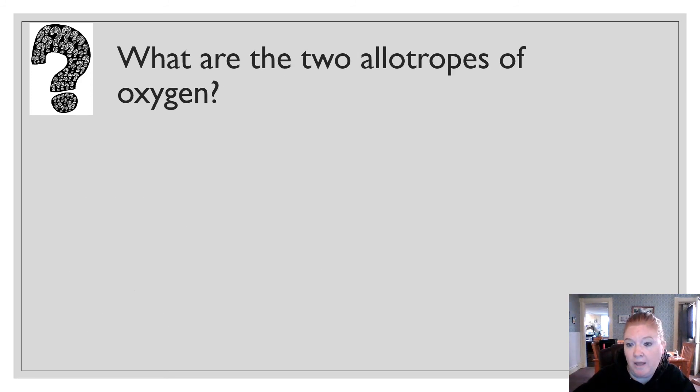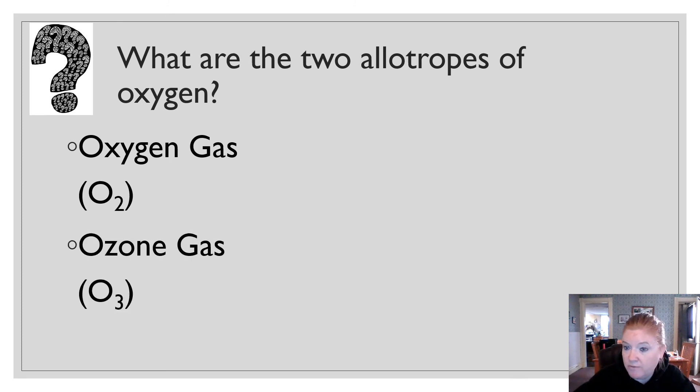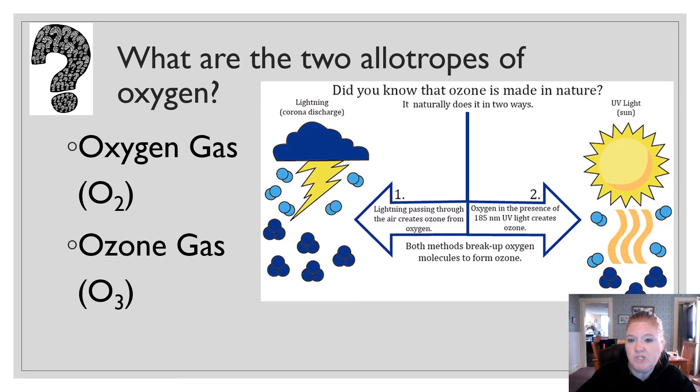What are the two allotropes of oxygen? We have oxygen gas, and then we have ozone gas, right? So ozone is made as lightning passes through the air, and that kind of creates that smell that you might smell after a thunder and lightning storm.